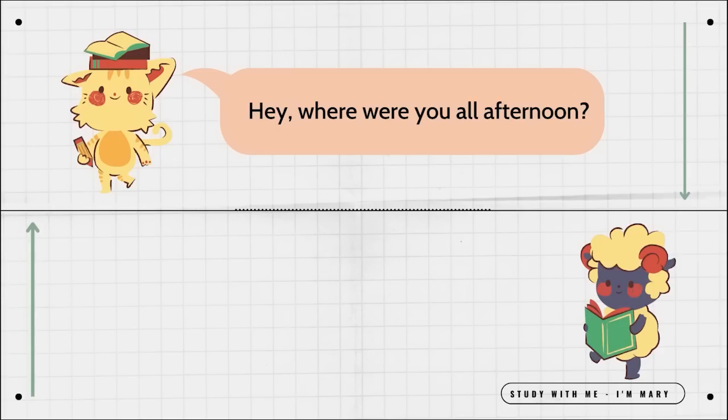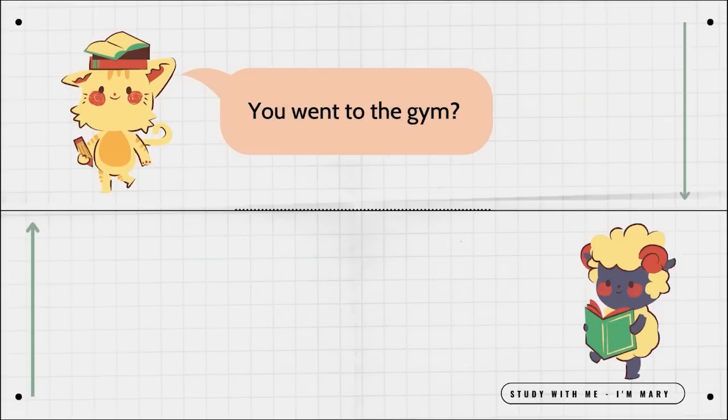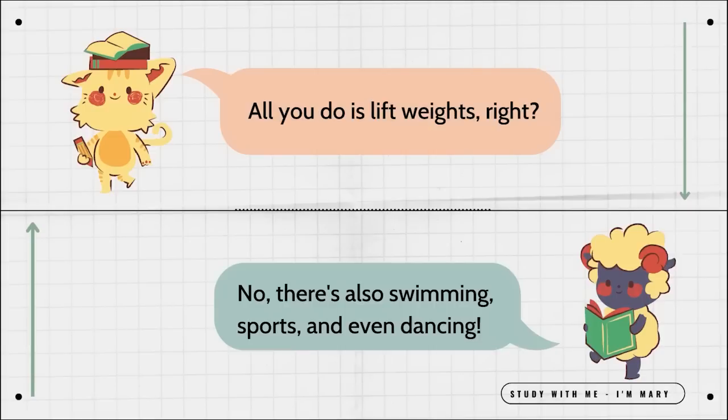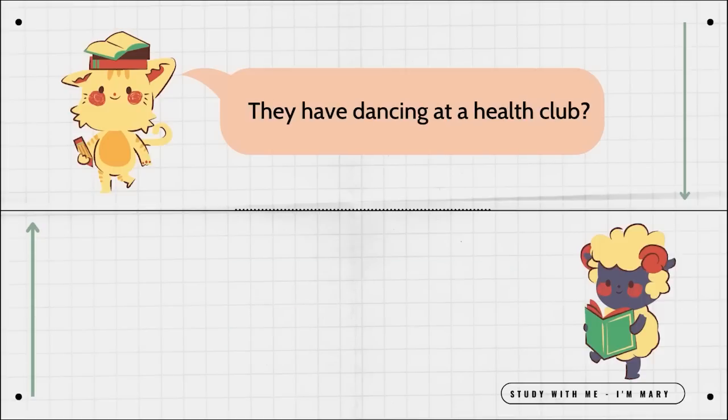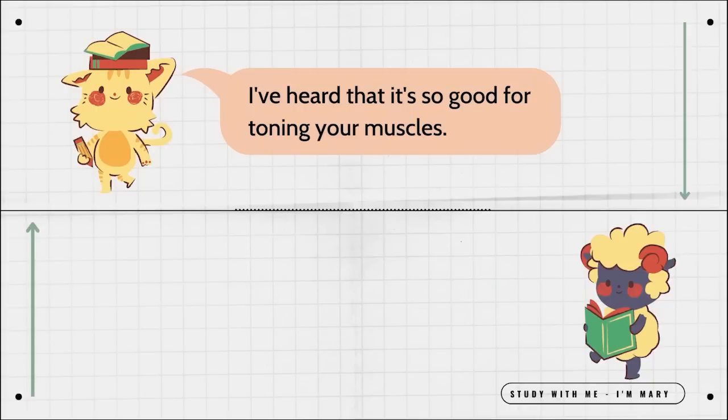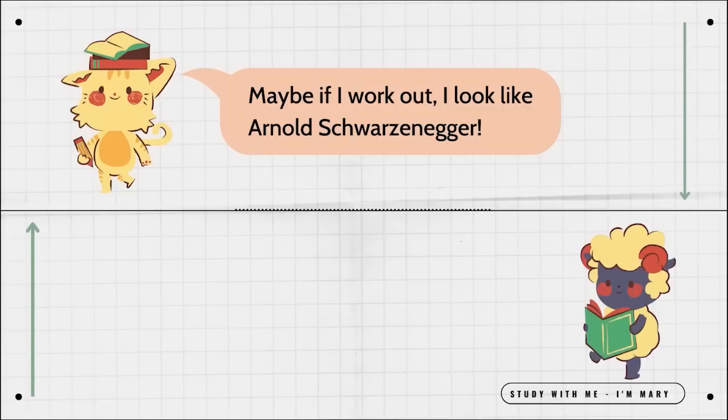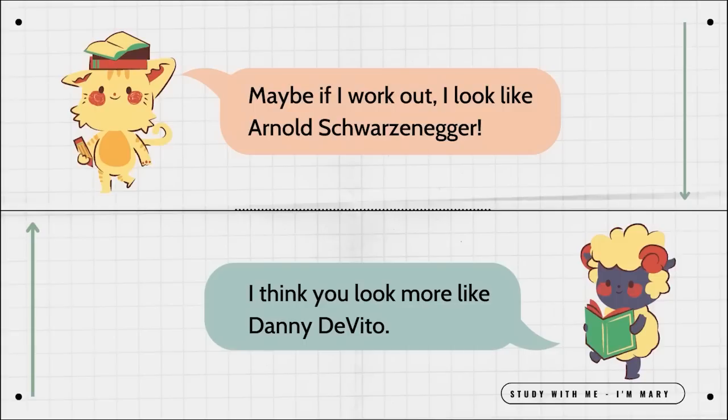Hey, where were you all afternoon? I was working out at the health club. You went to the gym? It's more than just a gym. All you do is lift weights, right? No. There's also swimming, sports, and even dancing. They have dancing at a health club? Of course. It's good for your coordination. I've heard that it's also good for toning your muscles. You should join me sometime. Maybe if I work out, I'll look like Arnold Schwarzenegger. I think you look more like Danny DeVito.